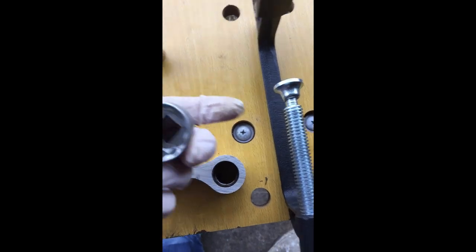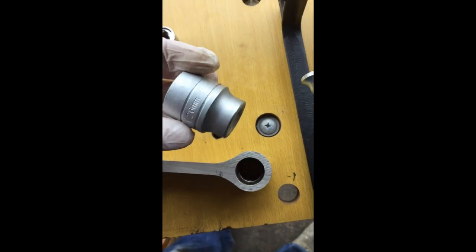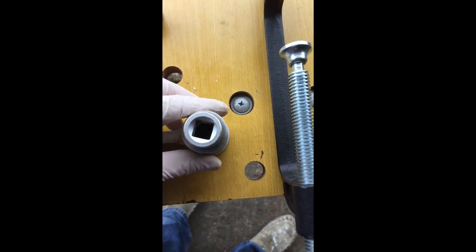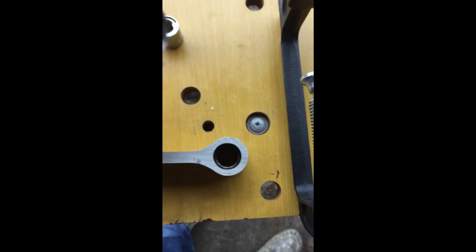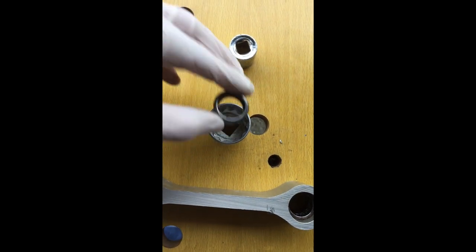And then I've got another socket here. So this particular one is about a 26mm socket. And that will go over the other end here. And it's big enough at this end to take the needle bearing. As you can see, it goes right inside.